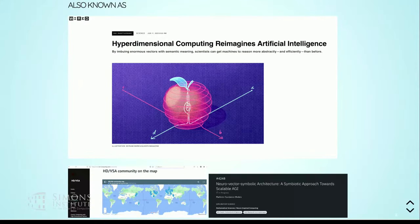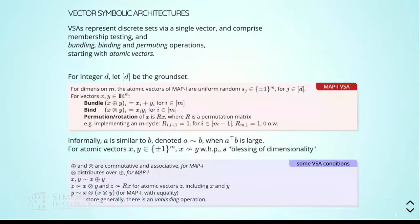There's a small group of people who work on something called vector symbolic architectures, or now also called hyperdimensional computing. It's not a big group in terms of machine learning and so on, but it's still relatively large — maybe comparable to the theory community.